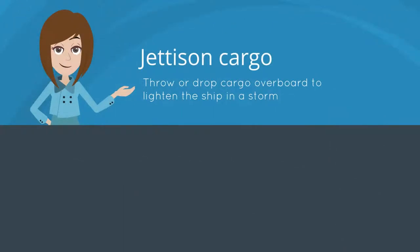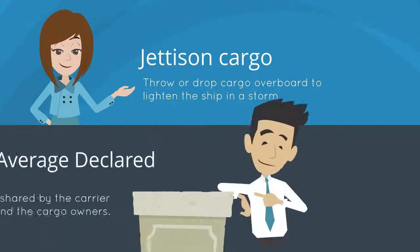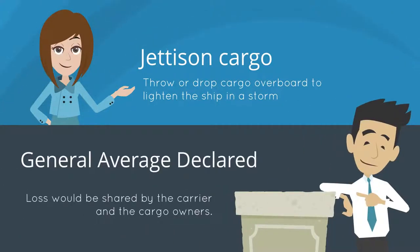For example, if the crew jettisoned or dropped some cargo overboard to lighten the ship in a storm, the ship owner would declare a general average and the loss would then be shared proportionately by the carrier and the cargo owners. When a general average is declared, customers with cargo on board that ship are expected to compensate other shippers whose cargo was jettisoned in order to save the ship and the rest of the cargo.